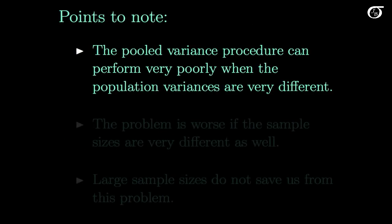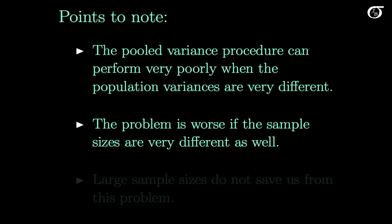Some points to note: the pooled variance procedure can perform very poorly when the population variances are very different. If the sample variances are very different, that gives some indication that perhaps you shouldn't be using the pooled variance approach. The problem is worse when sample sizes are also very different — if your sample variances and sample sizes are both very different, you really probably shouldn't be using the pooled variance approach, though there is a real grey area at times.